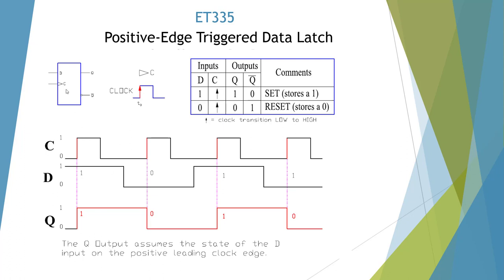We have a clock input here. Whenever we go from low to high we're going to look at the data. Right at this point it's going to be high, and nothing's going to happen until the next edge. At the next edge it's low, so it goes low. Then the next edge we look at the data again — it's high. Then we look again — it's low. So it only changes at the edge, making this a non-transparent device.